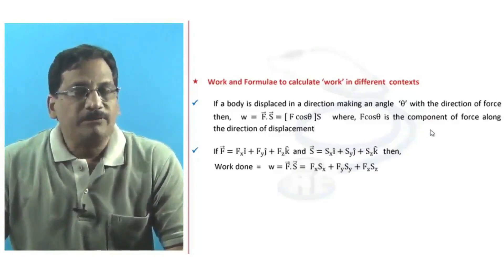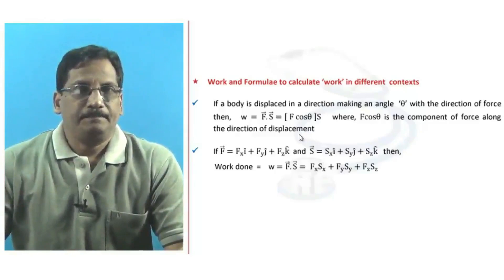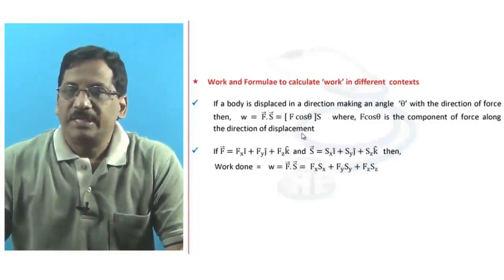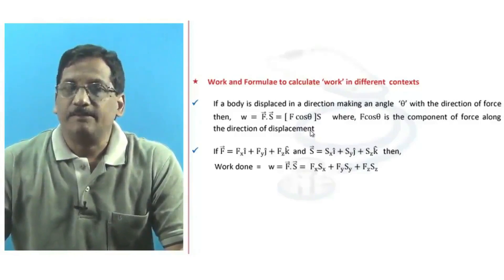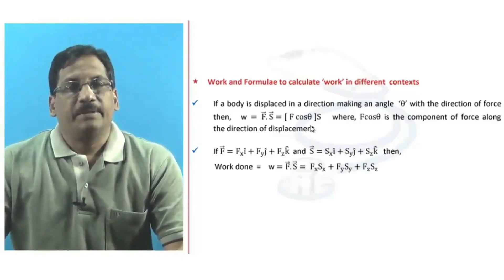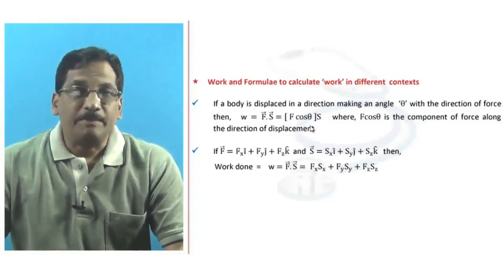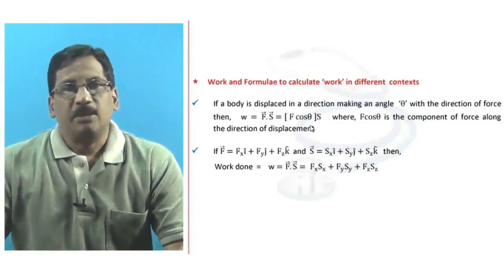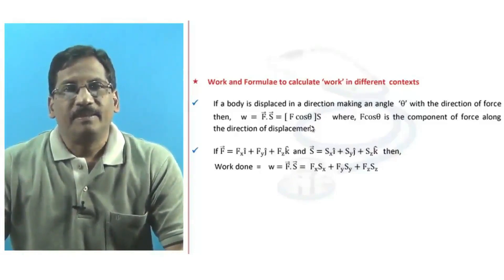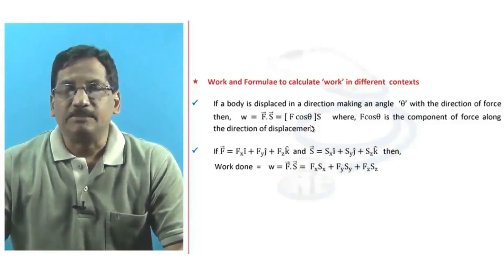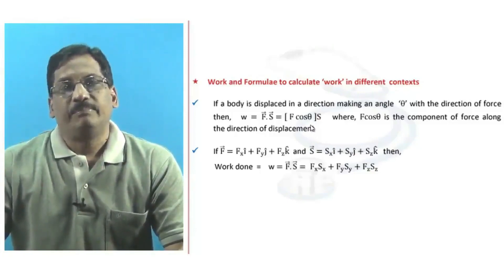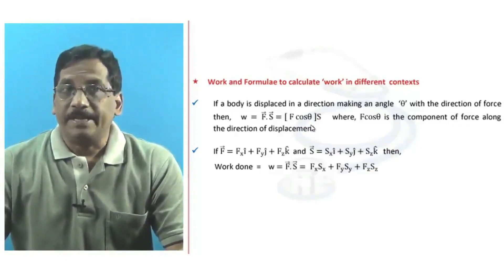If the applied force and the displacement are both in the same direction, then theta is zero degrees and the work done is simply the product of applied force and displacement. If the applied force and displacement are perpendicular to each other — for example, a person holding a load on his head and walking on a horizontal platform — the work done by the load is zero because there is no displacement in the direction of the load.